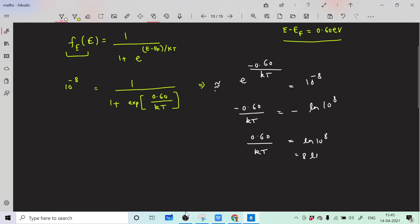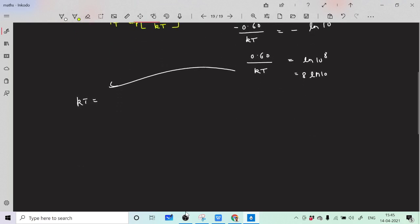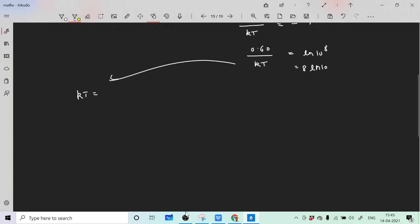So kT is what from here? kT is 0.60 divided by 8 ln 10.